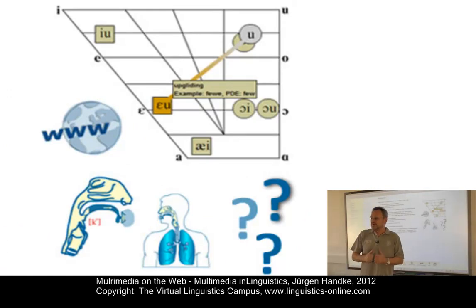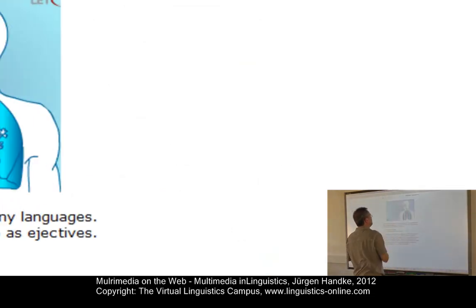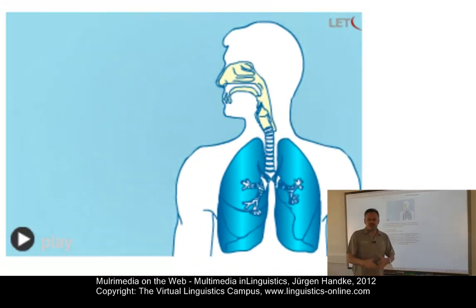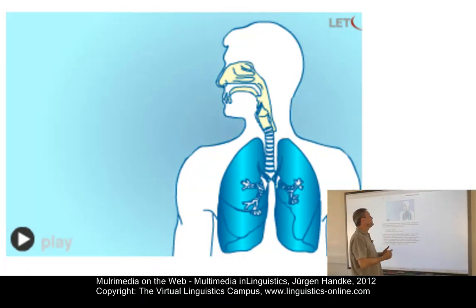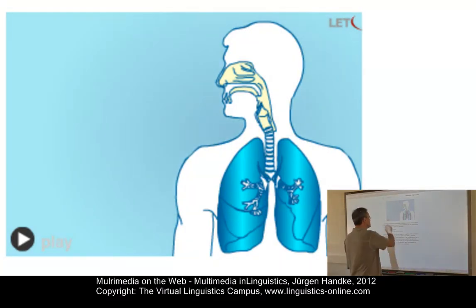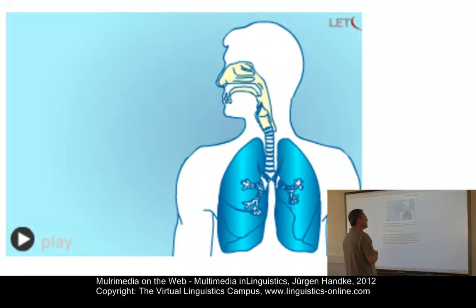The next example represents a shape animation, which can be used to represent the movement of articulators in particular airstreams. Here is an example that represents the glottalic egressive airstream used to produce ejective consonants.